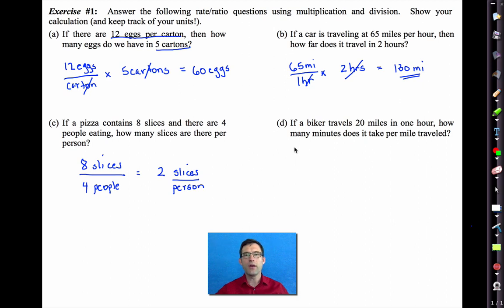Well, what we know is we know that in 60 minutes, we've traveled 20 miles, because we really want to know the minutes per mile. So what we see when we do the division is it takes us three minutes per mile traveled. That one's a little bit trickier. Think about it for a moment.